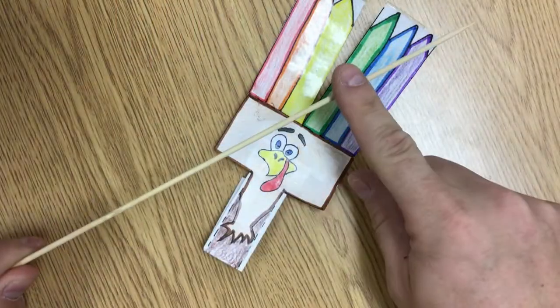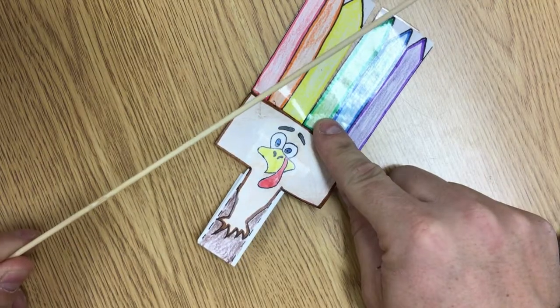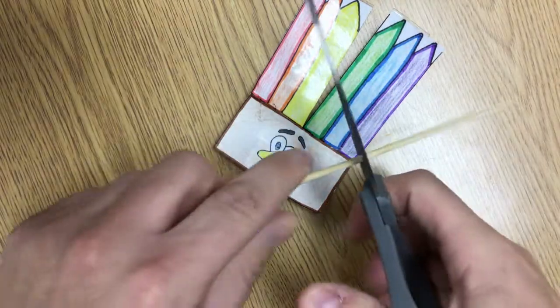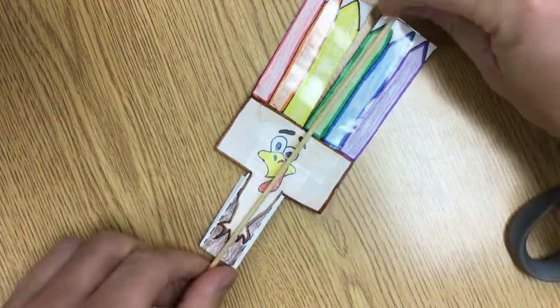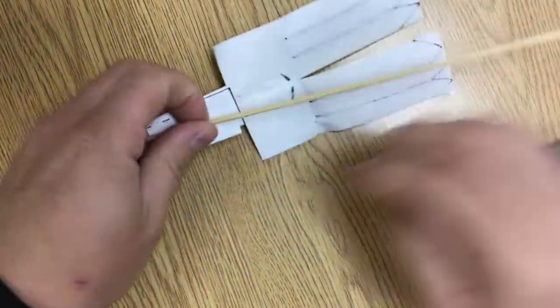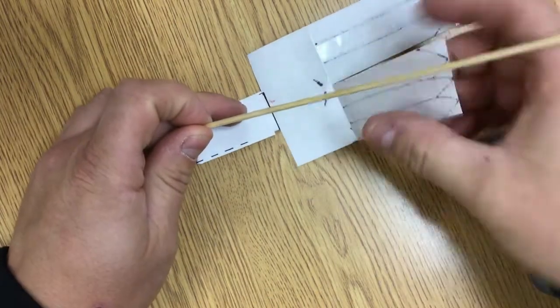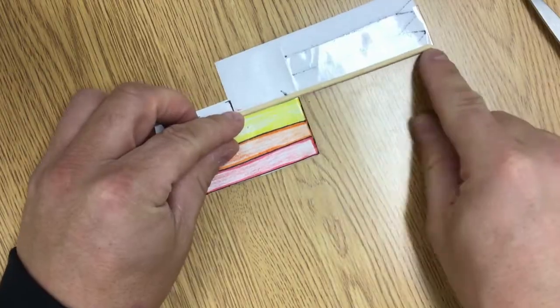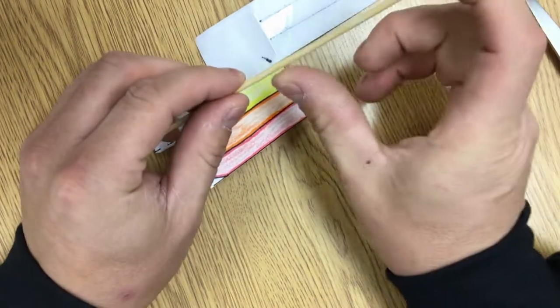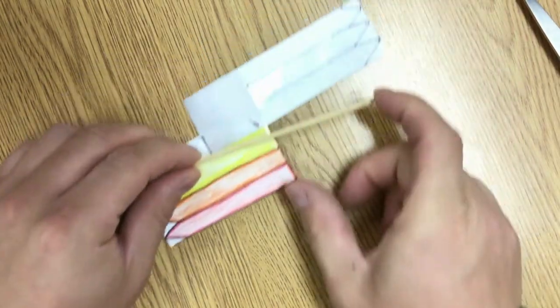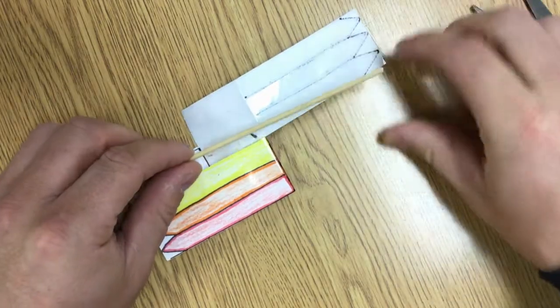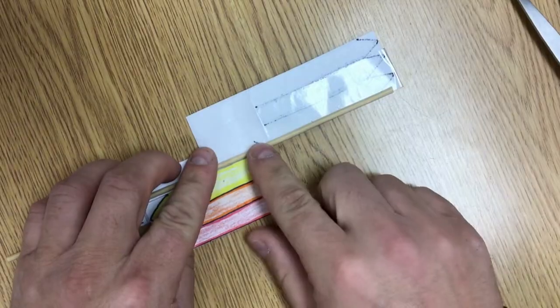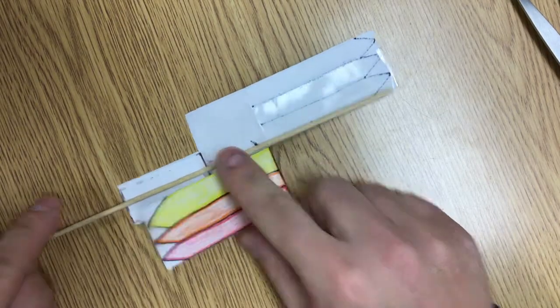Okay now it's time to attach my wooden skewer to my turkey copter. To do that I'm going to trim just the end of my wooden skewer so it's not as long. Now I'm going to flip my turkey copter over. I'm going to fold back the one flap. I'm going to leave a good portion of the wooden skewer sticking out the top and that's what I'm going to use to grab to pull back on my turkey copter. Now it's time to attach it with some clear tape.